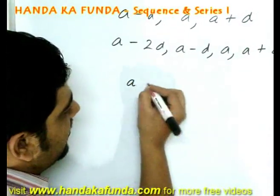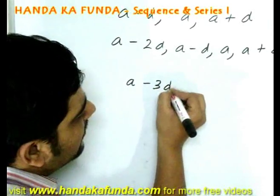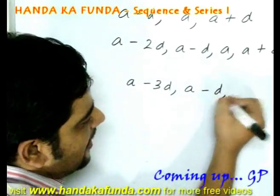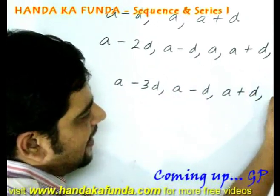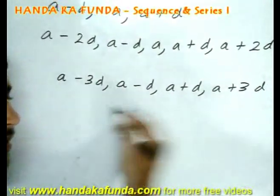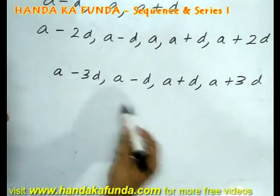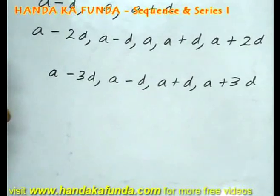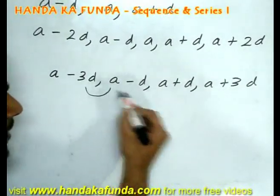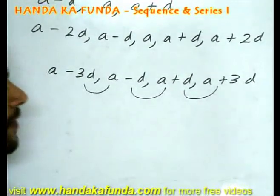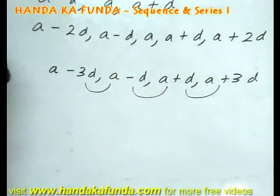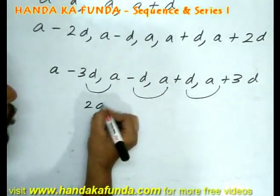In this particular case, you should take a minus 3d, a minus d, a plus d, and a plus 3d. Why have I done this? Because if I add all of it up, I am just left with 4a. And also the point to note is that the difference between any two consecutive terms is not d as in the cases above. It is 2d.